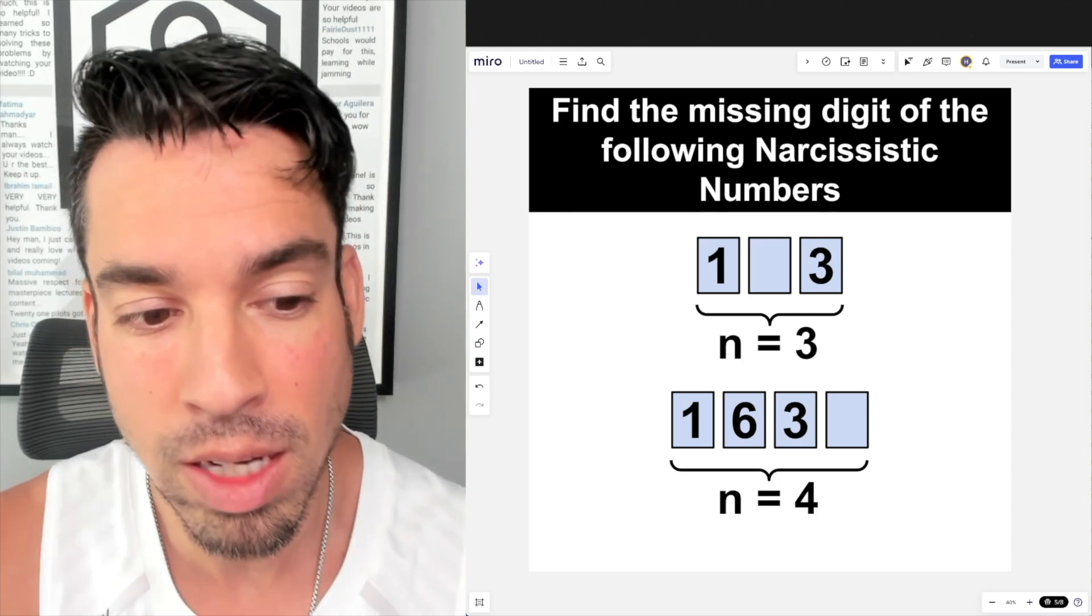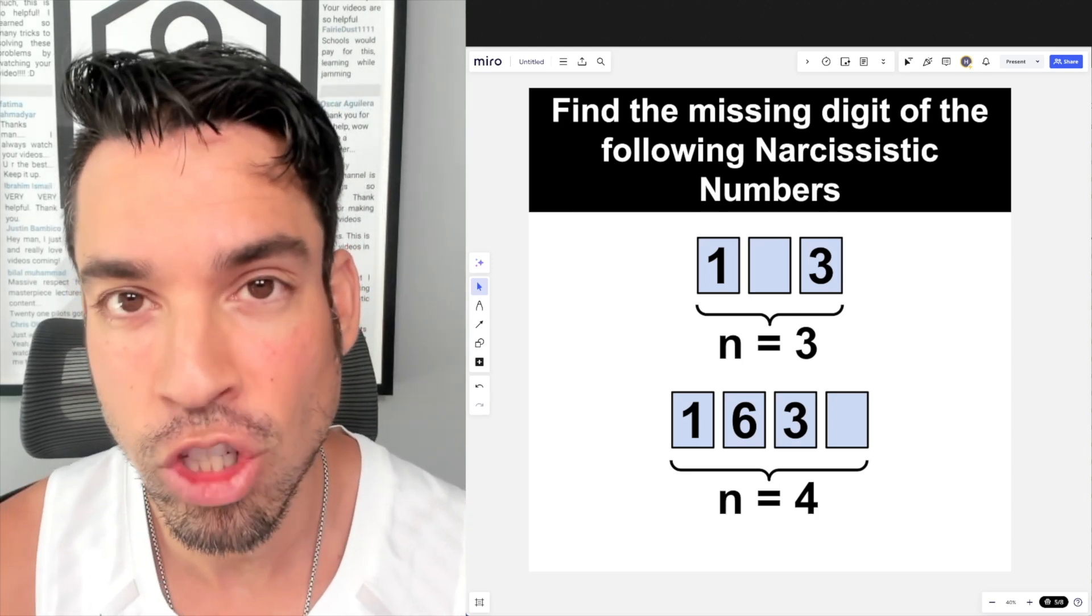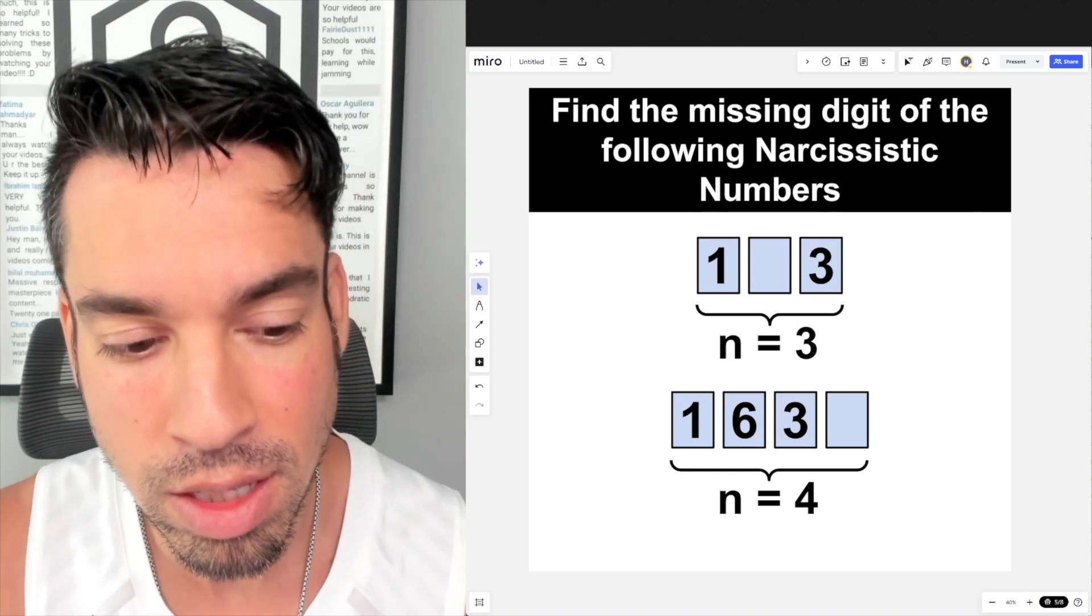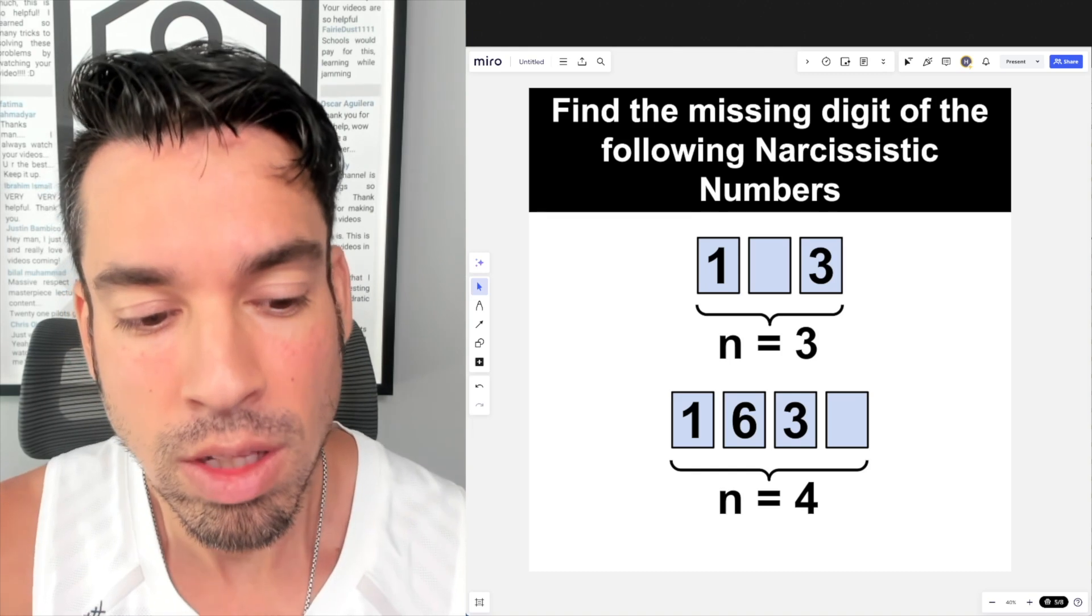For example, the first number is a three-digit number, so you're raising each digit to the third power and that should add up to the number itself. In the second number there are four digits, so you're raising each digit to the fourth power and taking the sum of those.